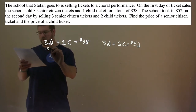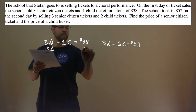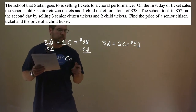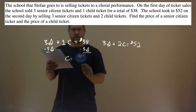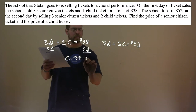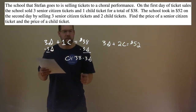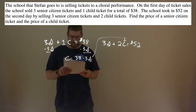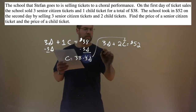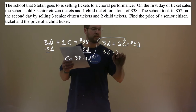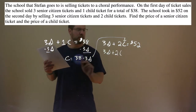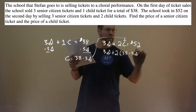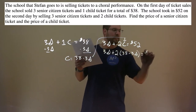We subtract 3S from both sides, and we're left with C equals 38 minus 3S. With that information, we're going to plug that in for C in the second equation: 3S plus 2 times (38 minus 3S) equals 52.